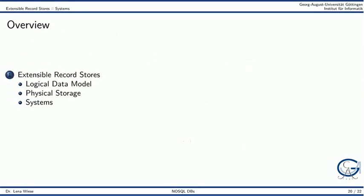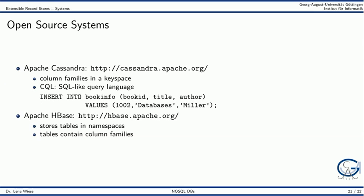Lastly, we will look at some extensible record store systems. The two most widely used open source systems are Cassandra and HBase. Cassandra stores column families in a keyspace. Its Cassandra query language looks a lot like SQL and you have the usual statements like create table, insert into, etc. The HBase system stores tables in namespaces and the tables contain the column families.